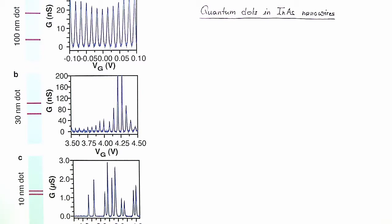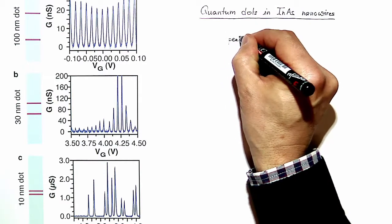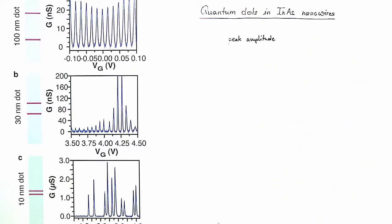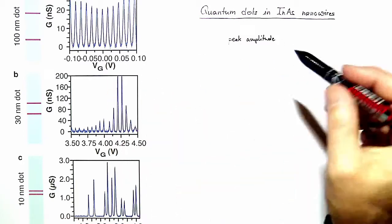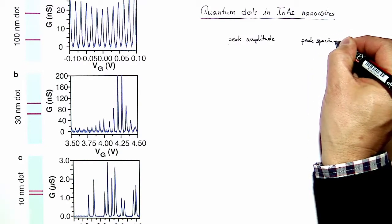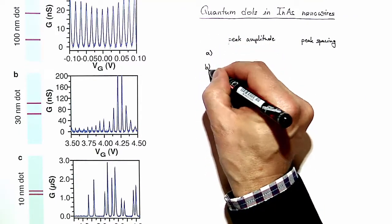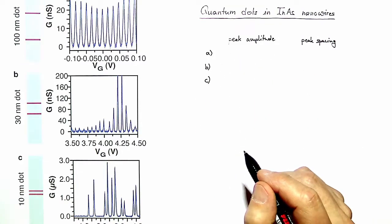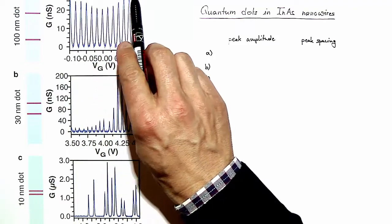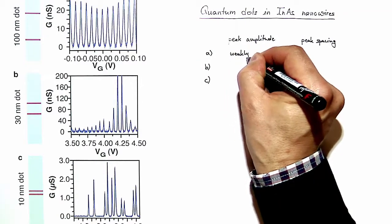What we will look at is in particular the amplitude of the conductance resonances — let me call it peak amplitude — and the spacing between the peaks in gate voltage, which we denote peak spacing. Concerning subfigure A, which is the topmost figure, the peak amplitude is only weakly modulated; these amplitudes are almost the same over the full range of gate voltage.